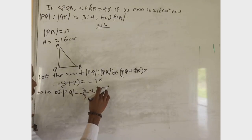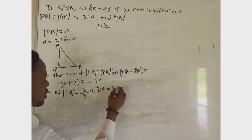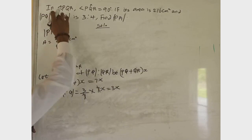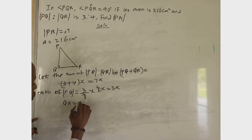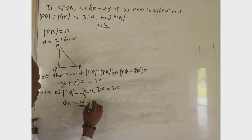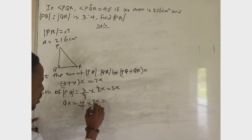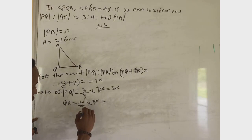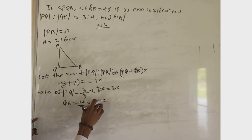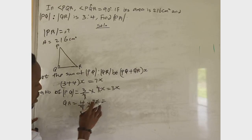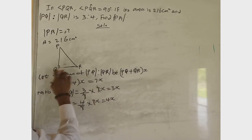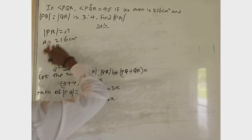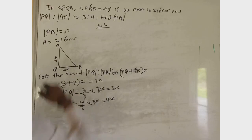The same thing goes for the second side QR: that gives us 4 over 7, multiplied by 7S. Seven cancels with seven, giving us 4S. So it means that side QR equals 4S, and side PQ equals 3S.